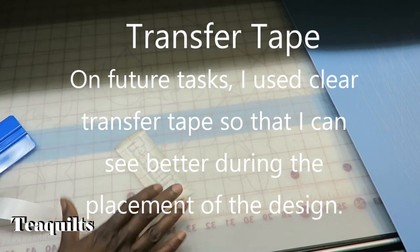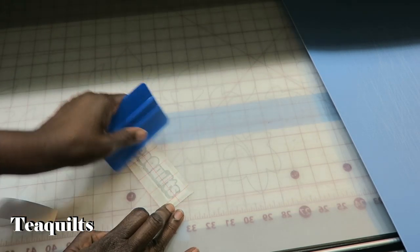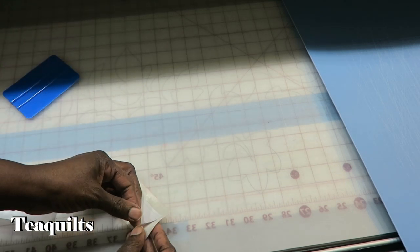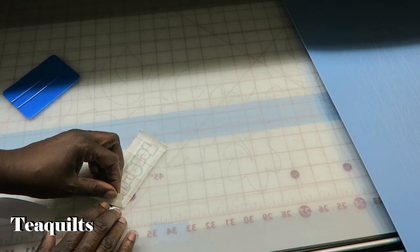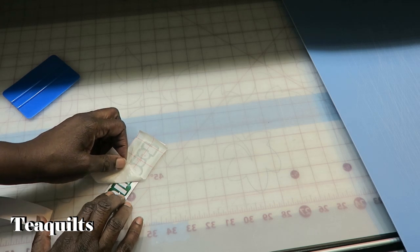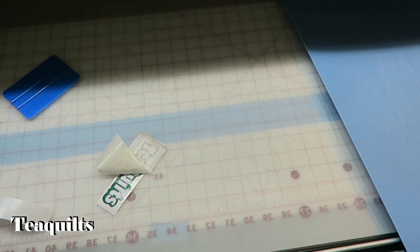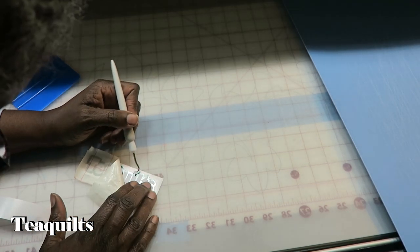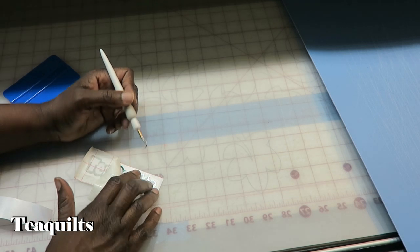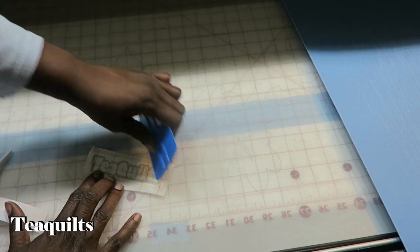And then once I get it placed, I want to use my squeegee again just to make sure that everything is holding. And then I want to go to the back. I actually want to pull this off the front because I want to put my eye on right there. So I have my eye here and I just want to place it wherever I want. And now I can pull that back and do the squeegee a couple more times.